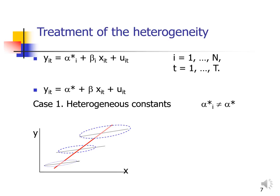You also have an error term because no relationship is perfect, especially in economics. Everything is just an approximation, so what we are going to do is take the second equation as an approximation. You can check that the second equation is a special case of the first one — the lower equation is just a case in which the i's disappear from alpha and beta.